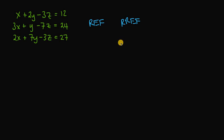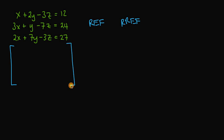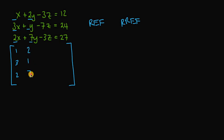Here I have a system of linear equations. The very first thing we want to do when we perform Gauss-Jordan elimination is write out the augmented matrix for this system. The augmented matrix consists of the coefficient matrix of all the coefficients of the unknown variables on the left-hand side, as well as all the constants on the right-hand side. For our first column we have 1, 3, and 2. On our second column we have 2, 1, and 7.